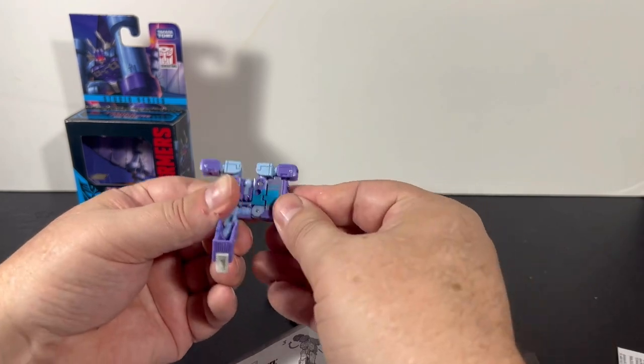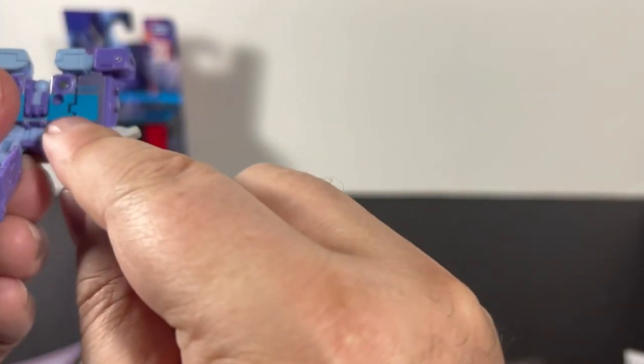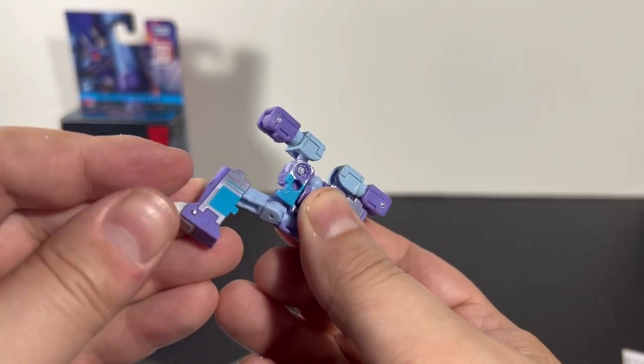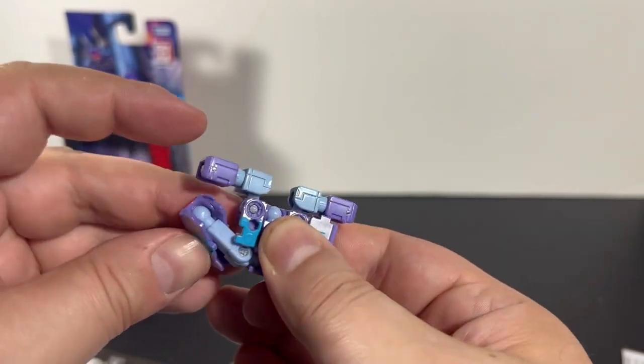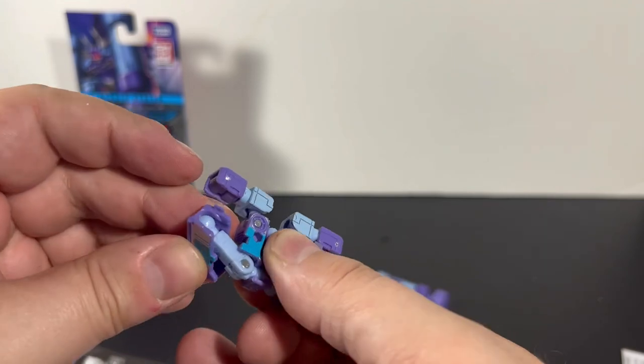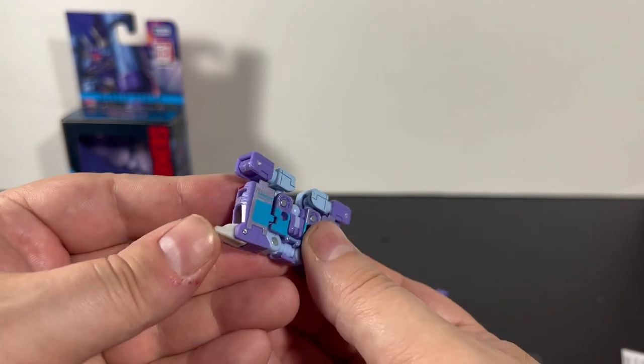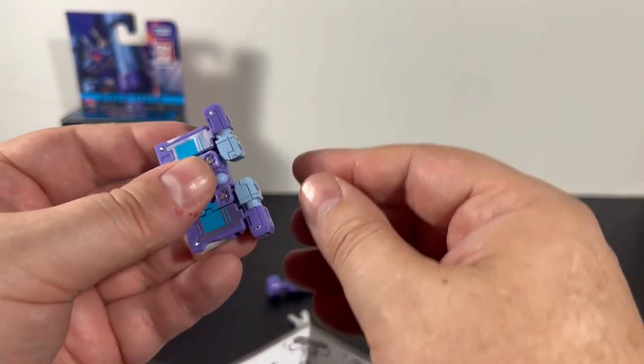This way, there they go. You want to line that little piece up, so you want to line it up that way. There you go. And then fold these in, and then the arms...